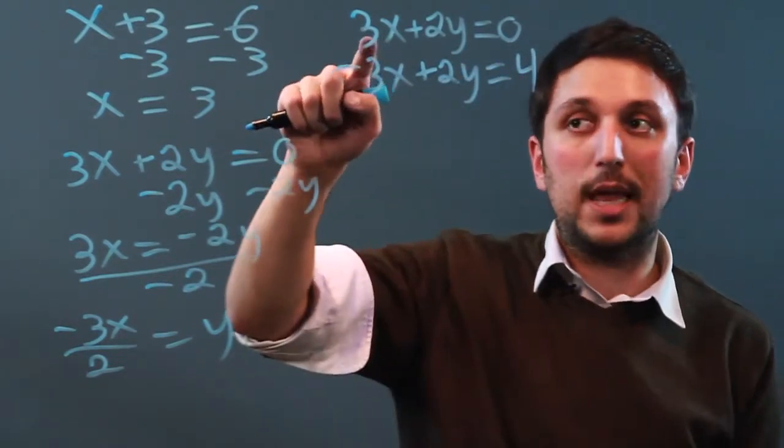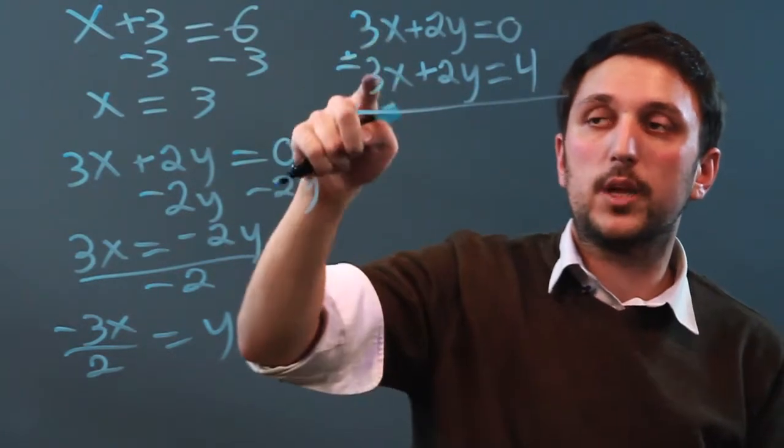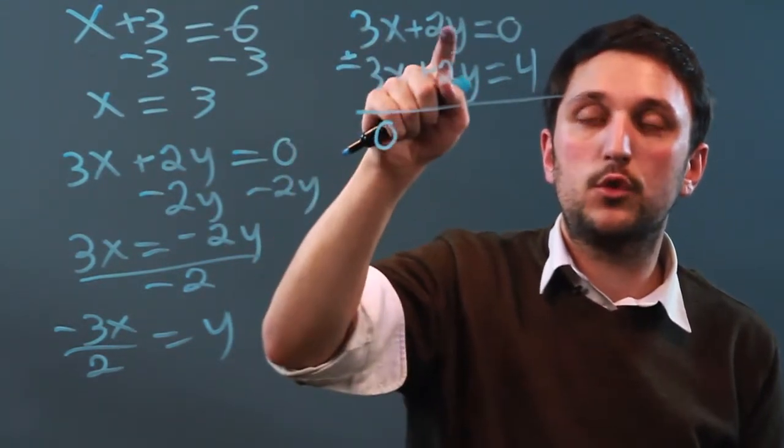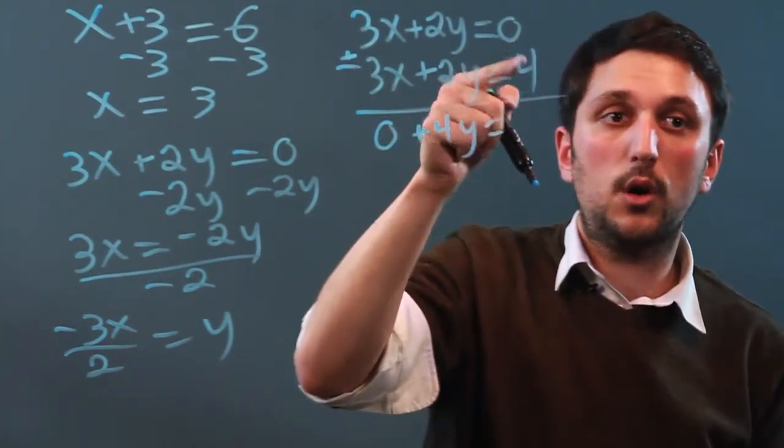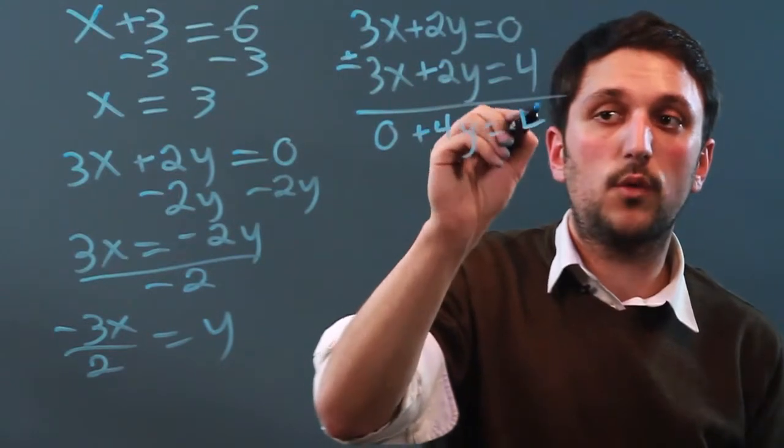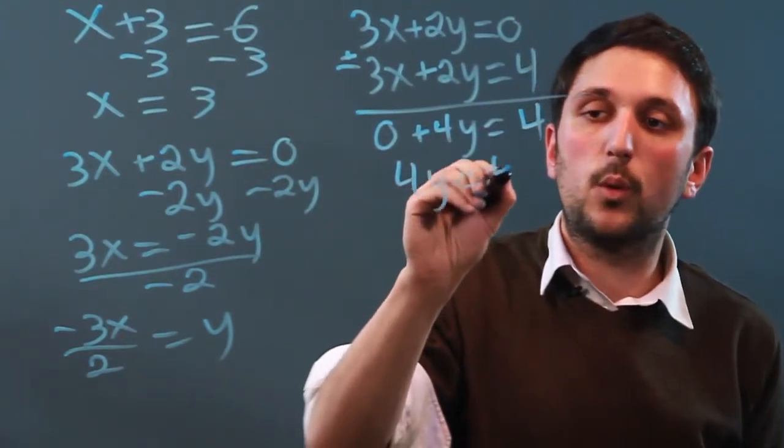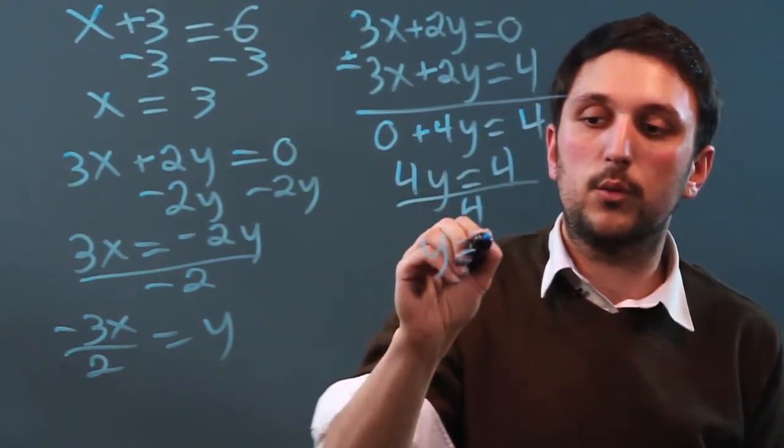Well, then we take this equation and we can add it to this equation, which means 3x plus negative 3x is 0. 2y plus 2y is 4y. And 0 plus 4 is 4. So now we have 4y equals 4, divide by 4, and y equals 4.